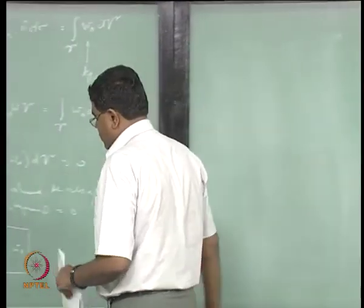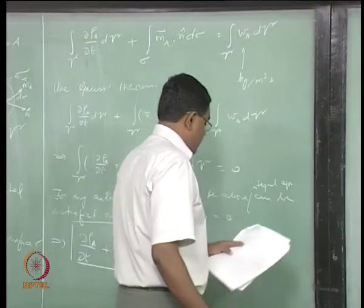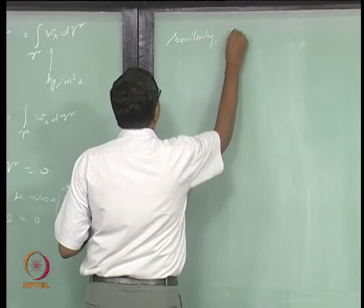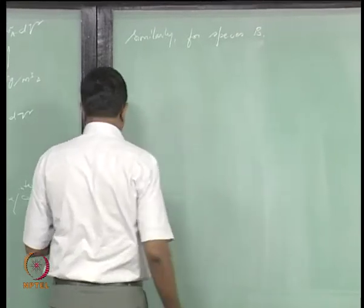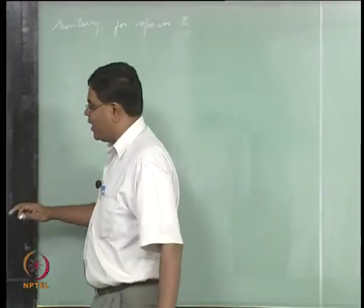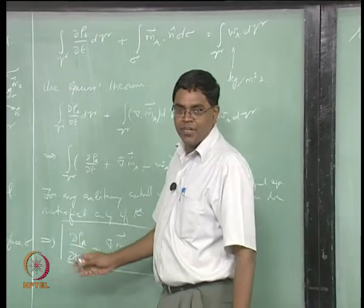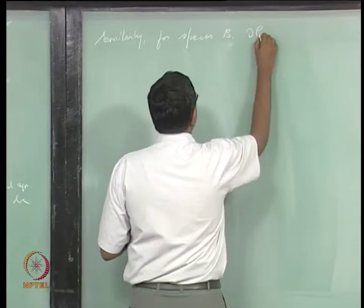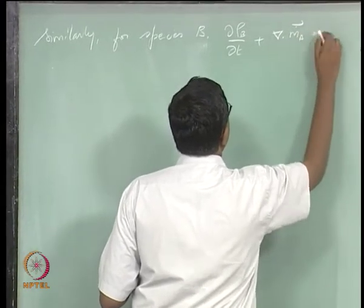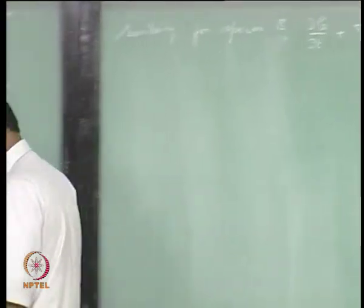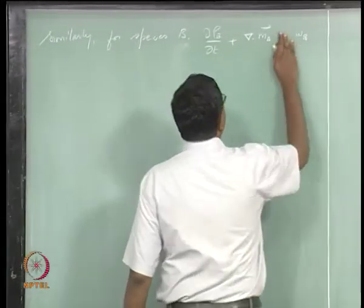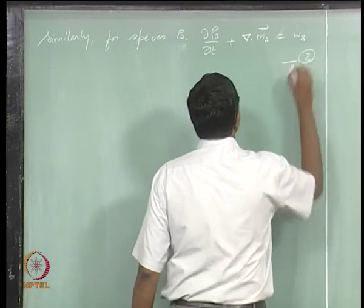We can write a similar equation for species B: ∂ρ_B/∂t + ∇·ṁ_B = w_B. We call the species A equation equation 1 and the species B equation equation 2. There is a specific reason for writing both, which will become clear when we add them together.